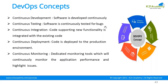Continuous development means you are developing software continuously and doing all checks before it moves to the next stage. In continuous testing, you do all types of tests in your environments. Normally you write code, test it, get error messages, then modify the code — all tests are done in the back end.